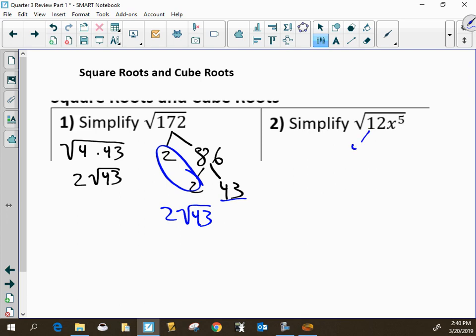Do a similar thing over here with the factor tree. And so what we see is a pair of twos and two pair of x's. Sorry, that second circle is a little off. There we go. And we will get 2x squared times the square root of 3x.